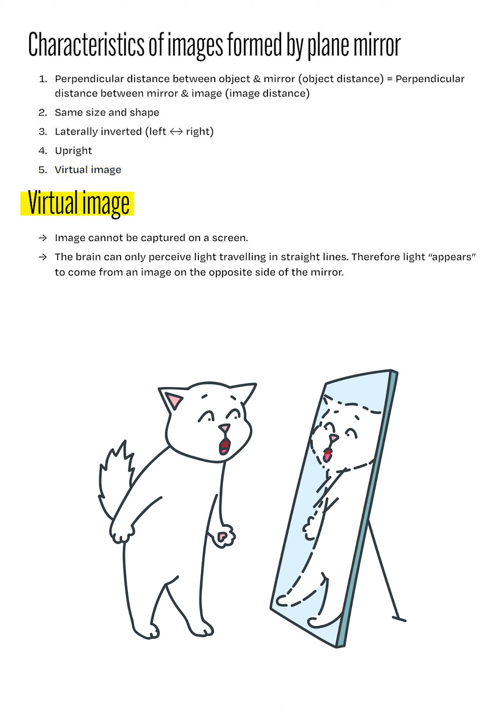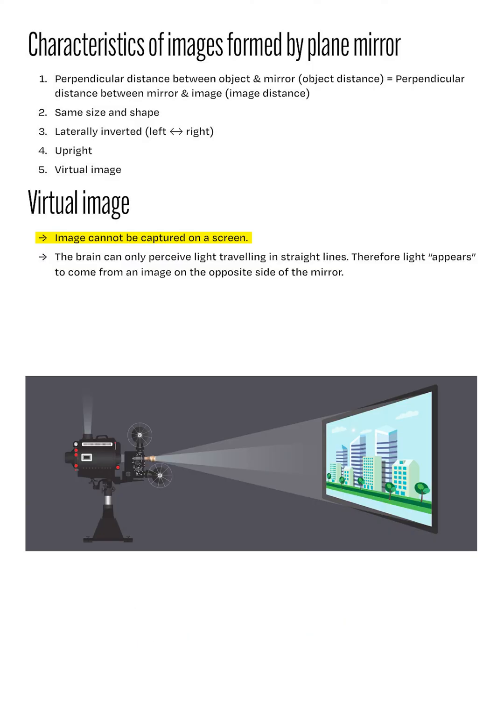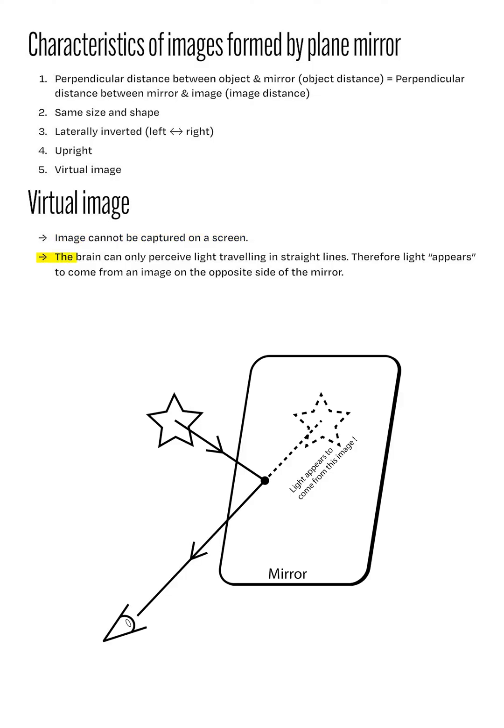But what is a virtual image? This is an image that cannot be captured on a screen. The opposite of a virtual image is a real image. A good example to represent real images is when we watch movies in a cinema. The images that we see on the screen in front of us are real images produced by a projector. So how can we see an image that isn't real?